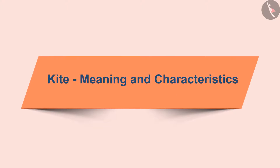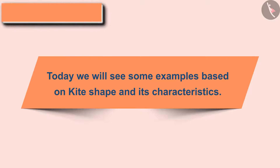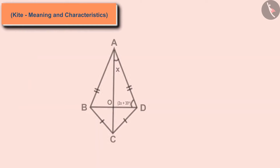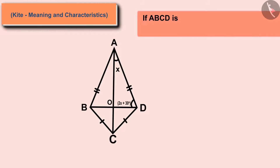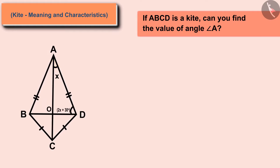Welcome to this video. Today we will see examples based on kite. If ABCD is a kite, can you find the value of angle A? The diagonals in a kite are perpendicular to each other. Using the triangle angle sum property for triangle AOD, and substituting all values into the equation, we get x = 20 degrees.